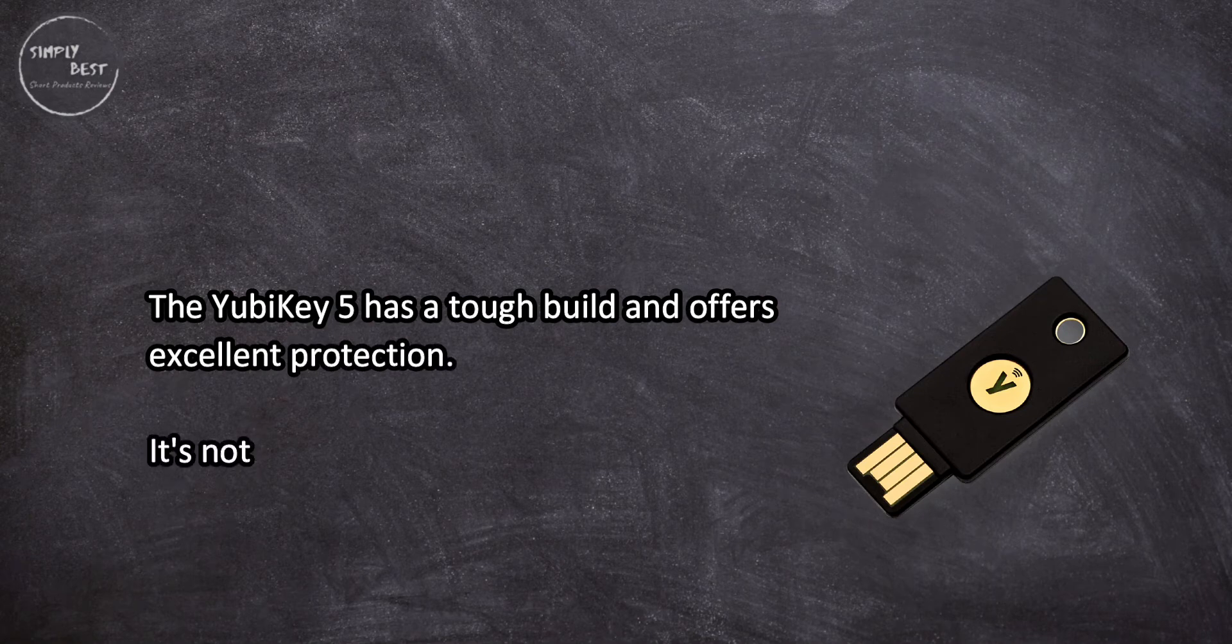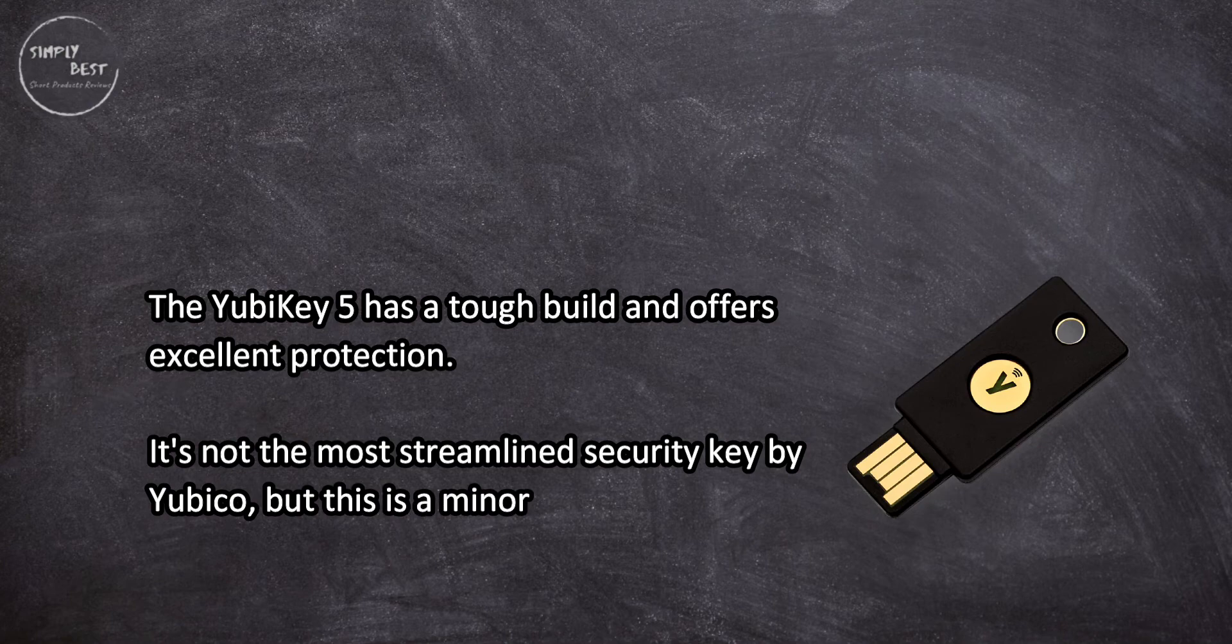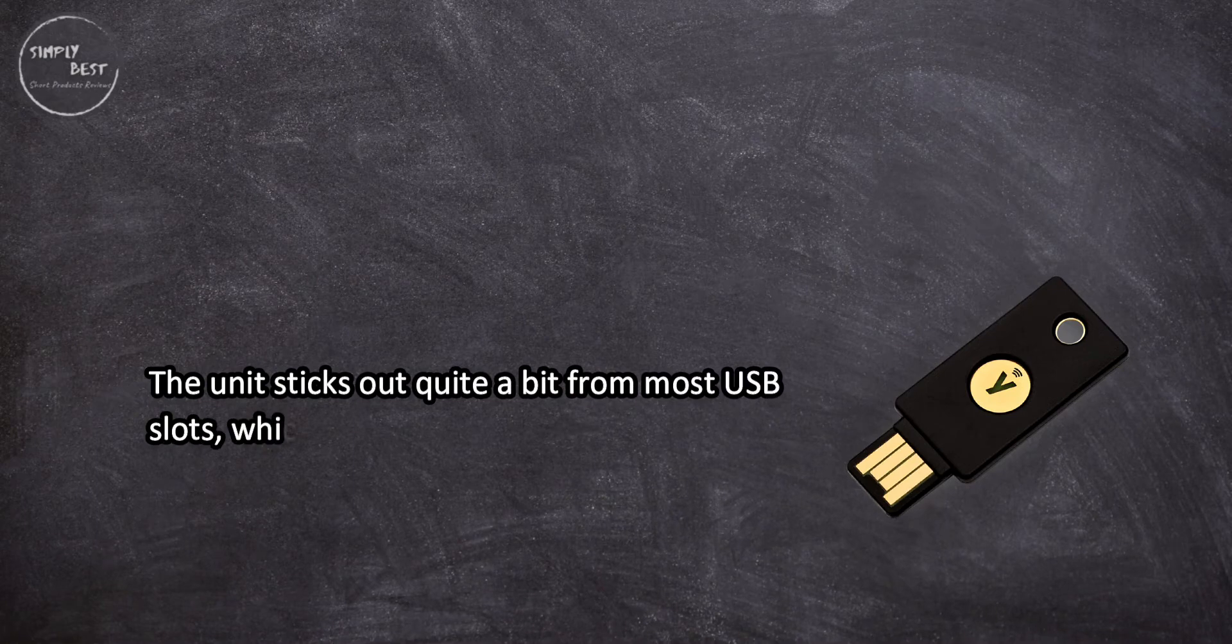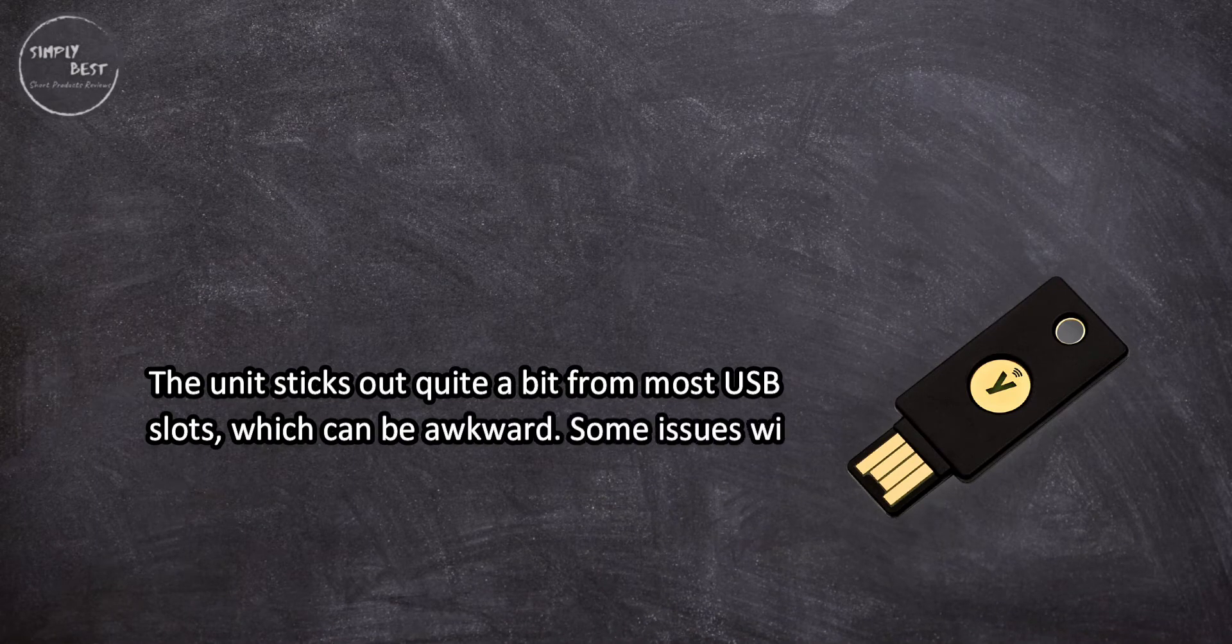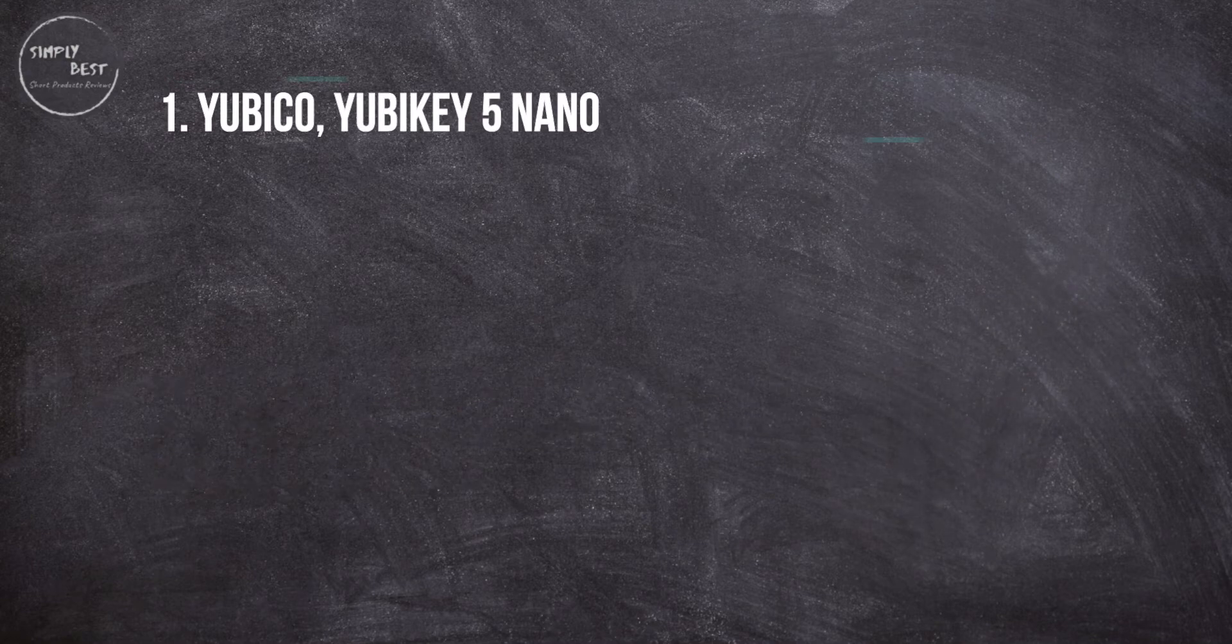It's not the most streamlined security key by Yubico, but this is a minor concern. The unit sticks out quite a bit from most USB slots, which can be awkward. Some issues with the setup process have been noted. At number one: Yubico YubiKey 5 Nano.